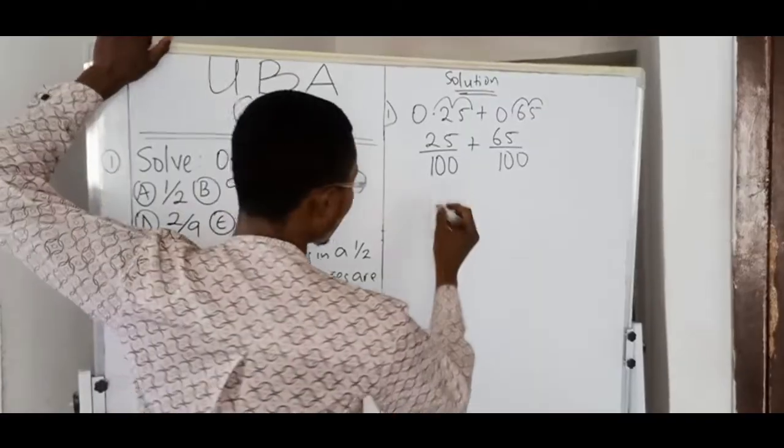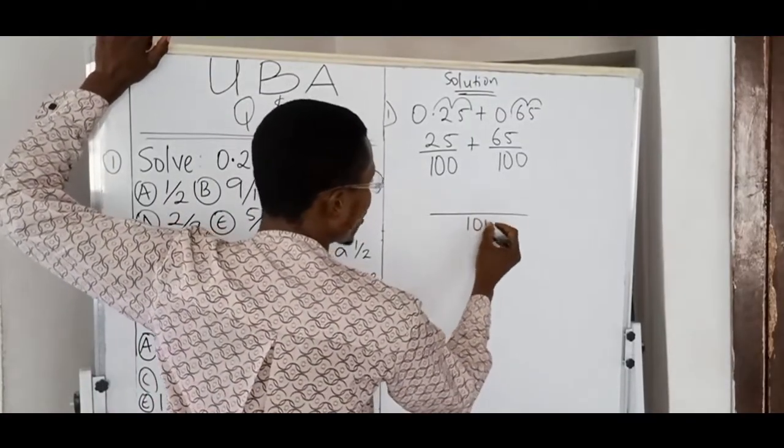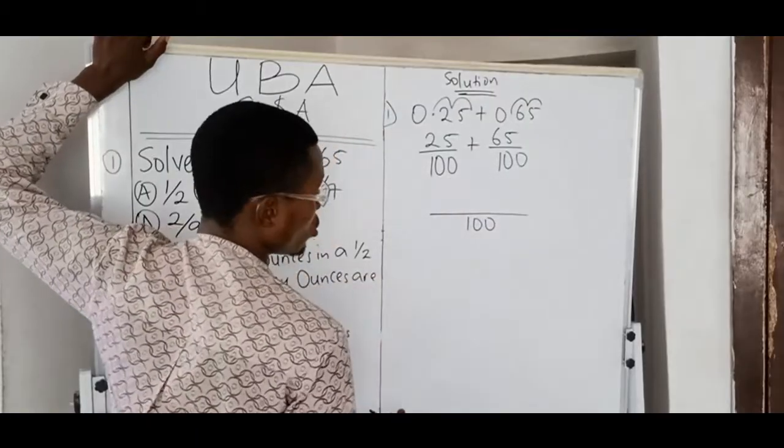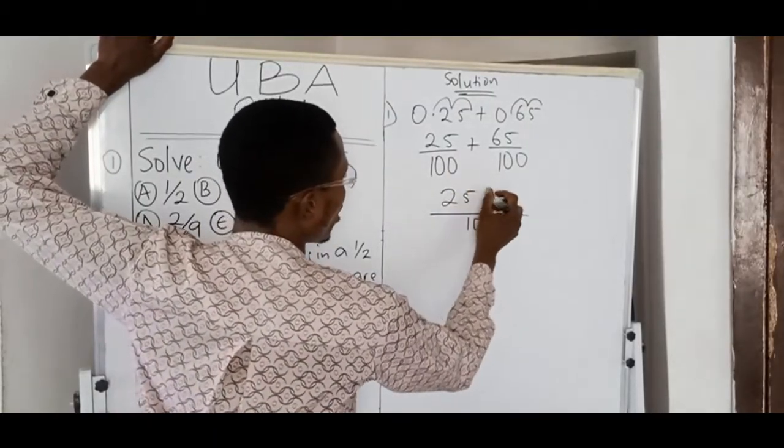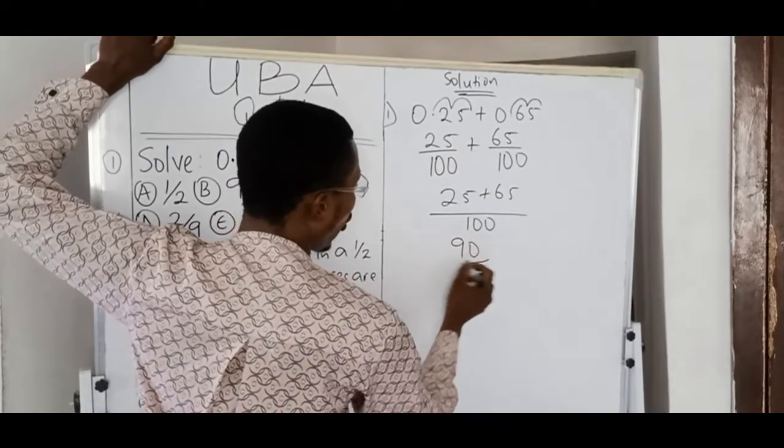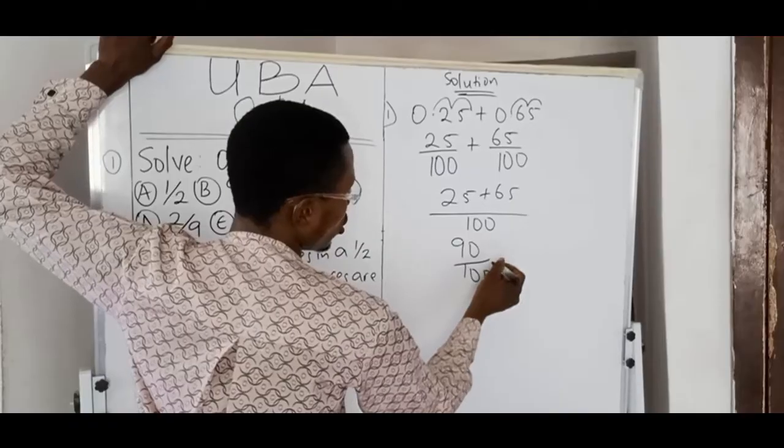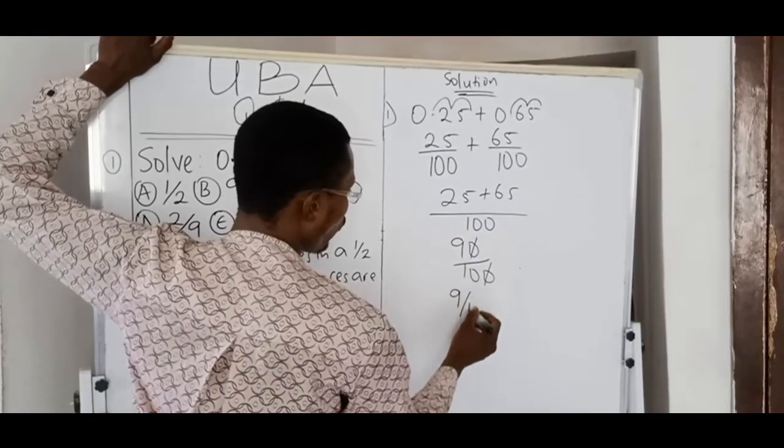Now, we add these two fractions. This is a like fraction. To add like fractions, pick one of the denominator. Like fractions are fractions with common denominator. 100. Then, the numerator, you have 25 plus 65. And this will give us 90 over 100. Zero cancels out zero. You have 9 over 10.